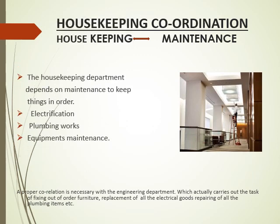Let us discuss about the coordination between housekeeping and the maintenance department. The housekeeping department depends on maintenance to keep things in order — electrification, plumbing works, equipment maintenance, and so on. Proper coordination is necessary with the engineering department, which carries out the tasks of fixing out-of-order furniture, replacement of all electrical goods, and repair of all plumbing items.